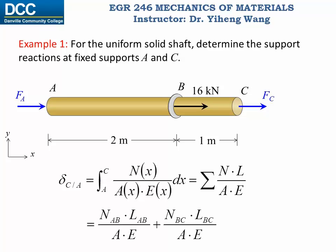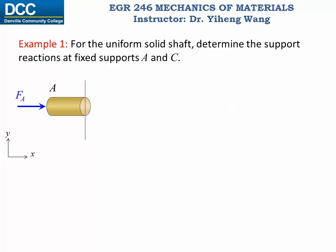In this case, the internal normal force within segment AB times the length of AB over AE, plus the internal normal force of segment BC times the length of BC over AE. We need to determine the internal normal forces NAB and NBC using the method of sections. First, we section anywhere between A and B, draw the free body diagram of the left segment, write the internal normal force NAB, write the equilibrium equation along the x direction, and find that NAB equals negative FA.